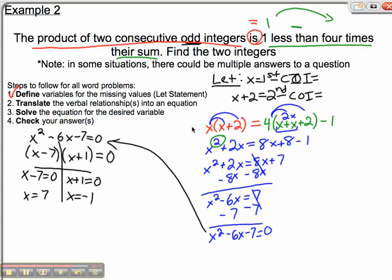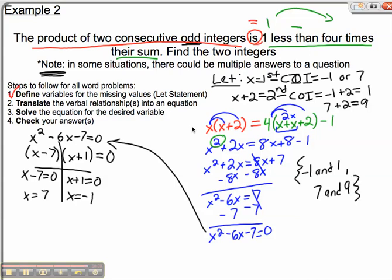Well, that's weird. I get two answers. But here's what you have to note. In some situations, there could be multiple answers to a question. So the first consecutive integer we saw could be negative one or seven. If the first one is negative one, the second one could be one. If it's seven, the other one is nine. So the two possible solutions are negative one and one, or seven and nine. That is how you solve this type of equation.